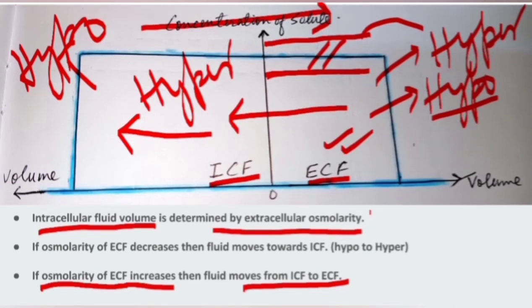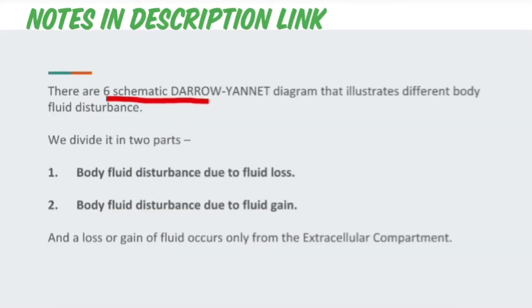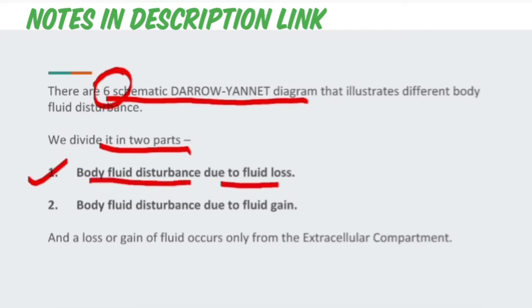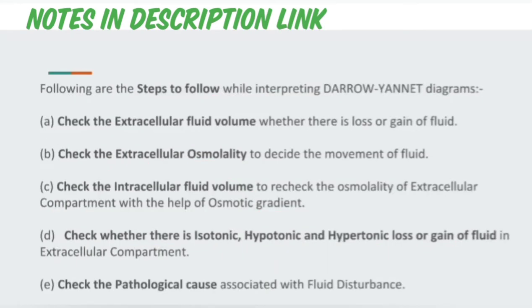Fluid shifting occurs until the osmolarity of the extracellular and intracellular fluid becomes equal. There are six schematic Darrow-Yannet diagrams, discussed in two parts: body fluid disturbances due to fluid loss, and body fluid disturbances due to fluid gain. This loss and gain of fluid occurs only from the extracellular fluid compartment.